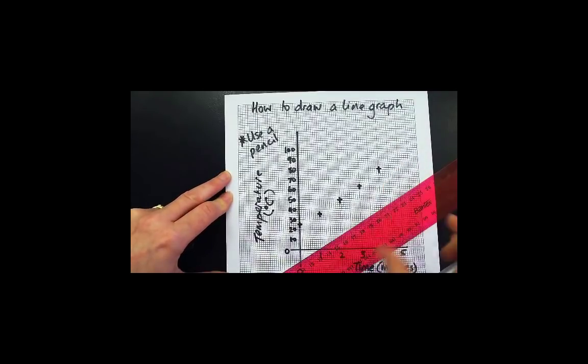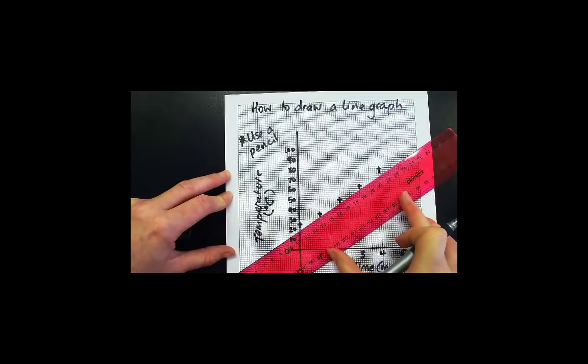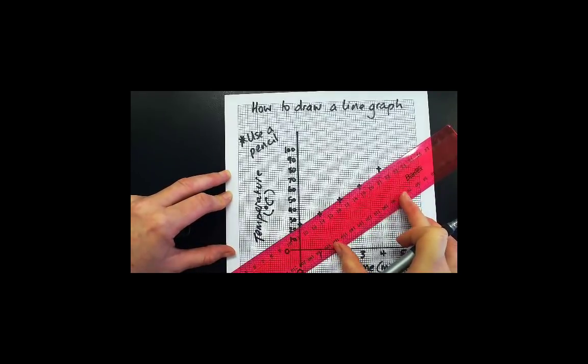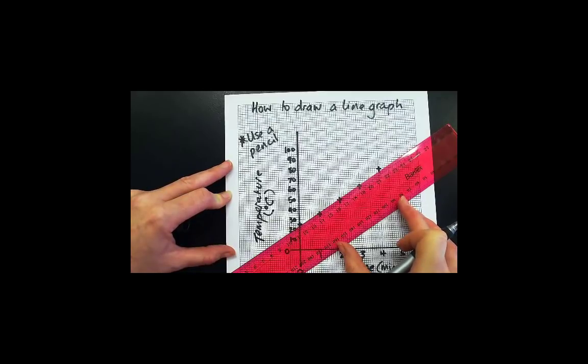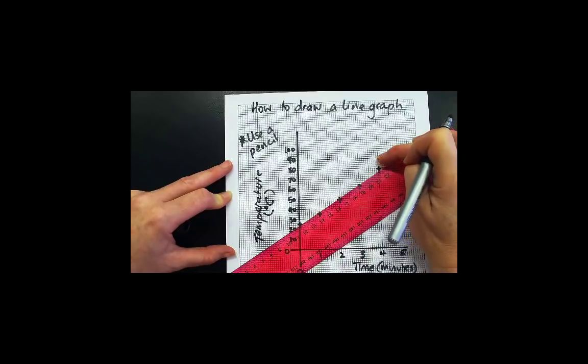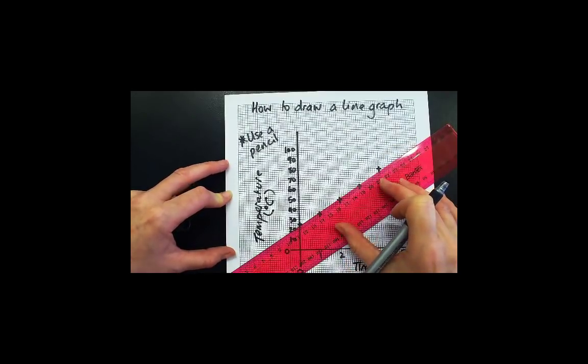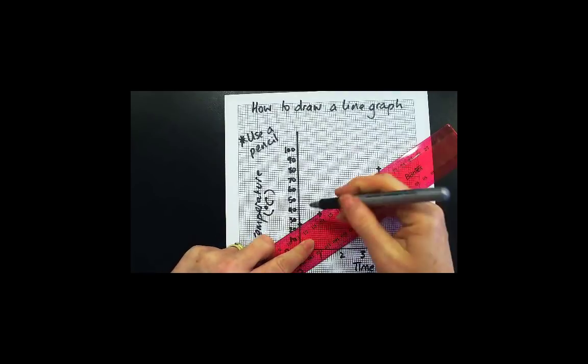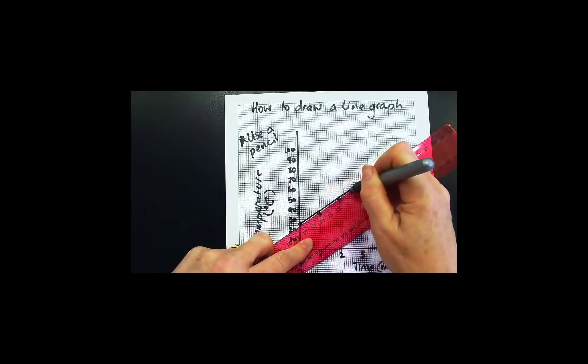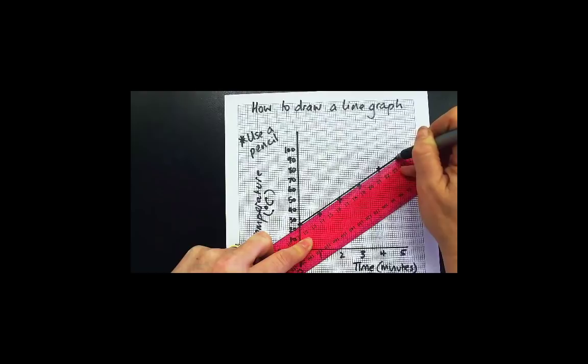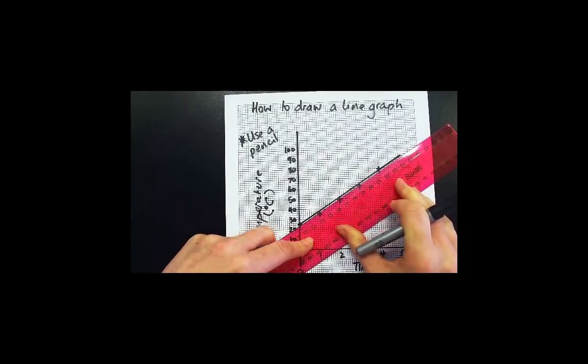you can draw a line of best fit using a ruler. And you try to go through as many points as possible. And if they don't all fit on the line, you try to balance the points that are above the line and the points that are below the line so that they are even. One single line to join them all together.